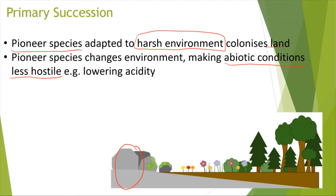So the pioneer species, which first colonised the land, would change the environment of that land. For example, we only had bare rock there, nothing else, but pioneer species changed the environment — there is more green stuff now, something that can grow where before nothing could grow. The pioneer species have changed the environment; they could have done that, for example, by lowering the acidity of the soil.